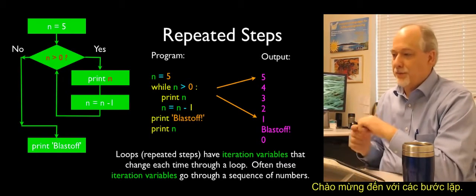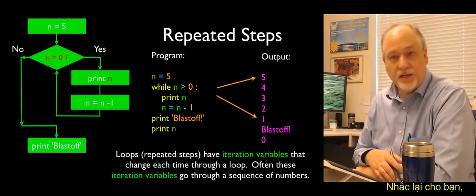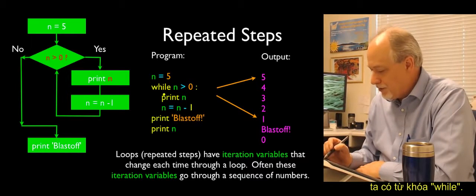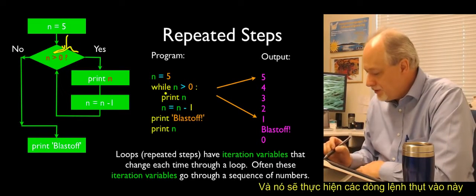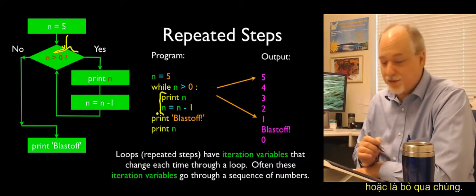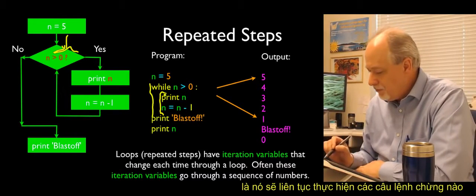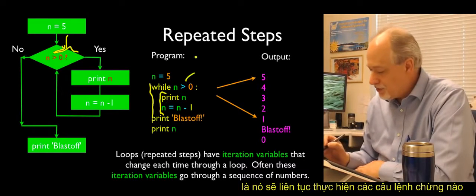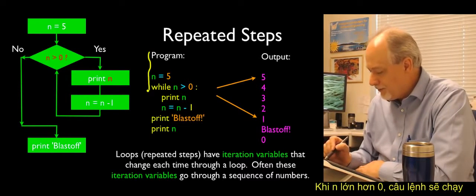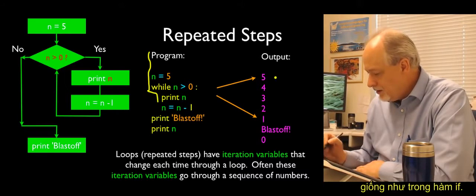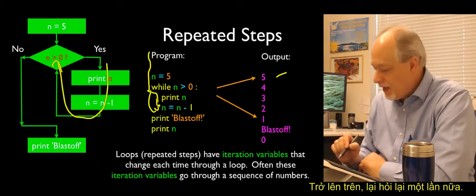Welcome to Repeated Steps. This is the example from the first lecture, Chapter 1. The basic idea is that you have the while keyword, which functions like an if in that it makes a decision — it's going to do the code in the indented block or skip it. The difference between while and if is that it does it many times, as long as the condition remains true. So with n equal to 5, while n greater than 0 — it prints 5, subtracts 1, goes back up, checks again. Is n still greater than 0? Yes, so it continues: 4, 3, 2, 1.